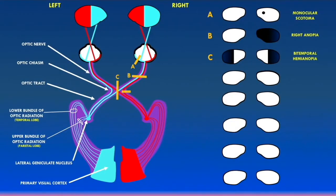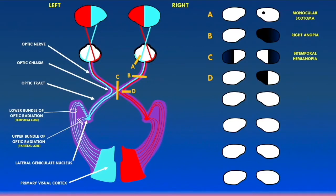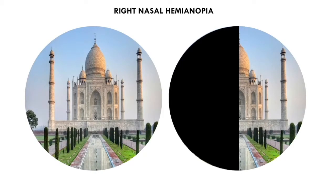Lesion D is also a lesion of the optic chiasm, but specifically affecting the outside portion. The fibers coming from the temporal hemiretina of the right eye are being damaged — remember, these fibers stay ipsilateral. So there is a loss of the left visual field in the right eye, known as a right nasal hemianopia.